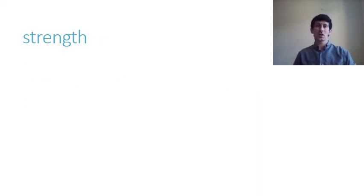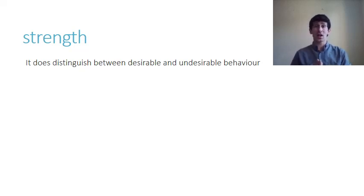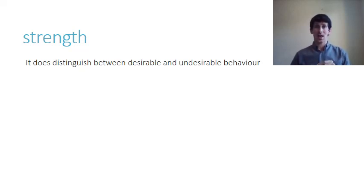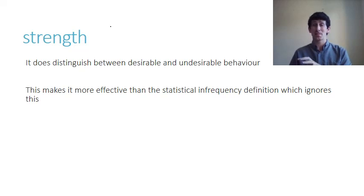So we've had a look at a few of the weaknesses, but this definition does have one major strength: the fact that it can distinguish between desirable and undesirable behaviors. It sees something like a high IQ as deviating from social norms, but as a desirable behavior. If you remember back to statistical infrequency, it couldn't do that — an IQ of over 130 is only held by 2% of the population, so it's classified as abnormal. Whereas this definition says yes, it deviates slightly from social norms, but it's a desirable behavior. That's what makes it a more effective definition than statistical infrequency — it allows us to distinguish between what is desirable and what isn't desirable behavior. And that's a major strength.